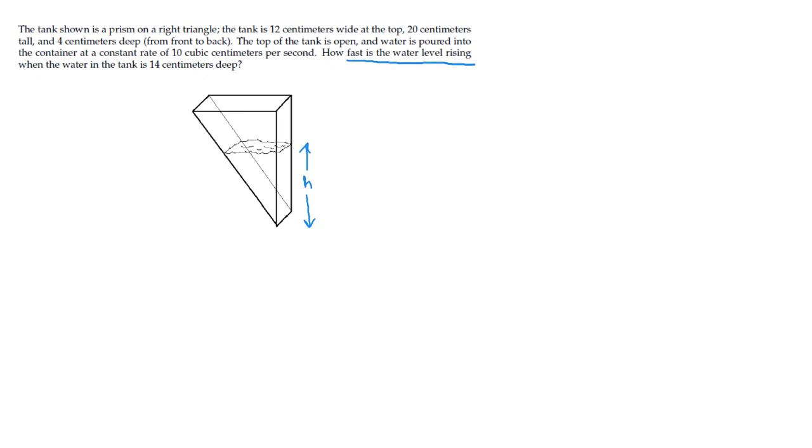It's important to keep in mind that h represents the height of the water in the tank, not the height of the tank itself. That is a constant equal to 20 centimeters. So when we talk about a variable h, we're going to be talking about the rising height of the water.